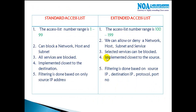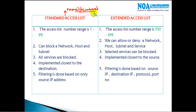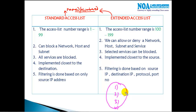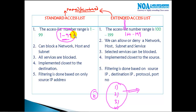Let's understand the difference between standard and extended ACLs. For numbered ACLs, if you give any number between 1 to 99, the router automatically understands it is a standard ACL. If you give a number between 100 to 199, the router understands it is an extended ACL.